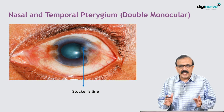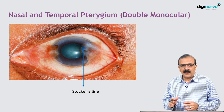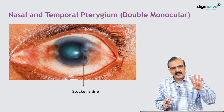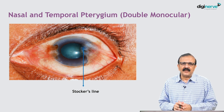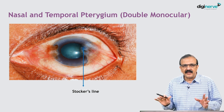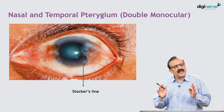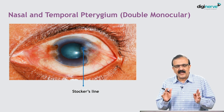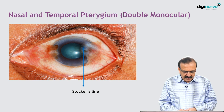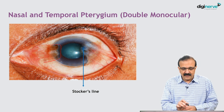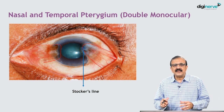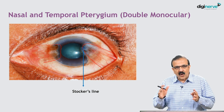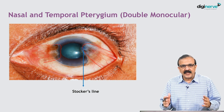The pterygium is more common in the nasal part — in fact, there are four reasons why it is more common nasally. But that does not mean it cannot happen in the temporal part. Here we have a nasal pterygium and a temporal pterygium in the same eye, so we call it a double monocular — it happens in one eye, and it is a double pterygium.